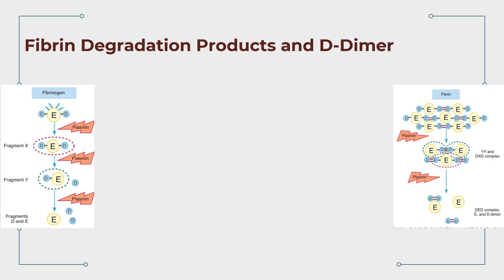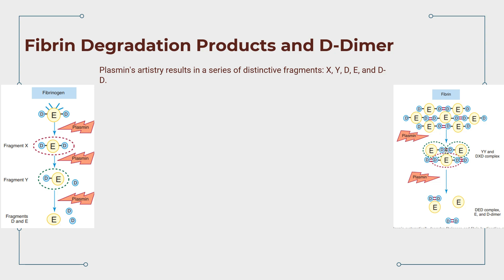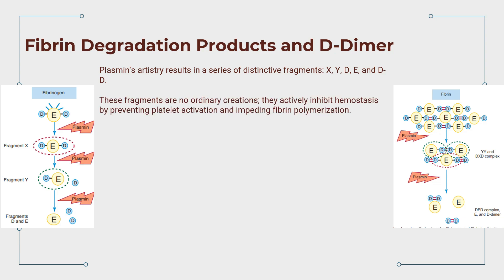Plasmin's artistry results in a series of distinctive fibrin degradation fragments: X, Y, D, E, and D-dimer. These fragments actively inhibit hemostasis by preventing platelet activation and impeding fibrin polymerization. Fragment X is akin to the central E-domain flanked by two D-domains. Fragment Y emerges as the E-domain after loss of one D-domain.